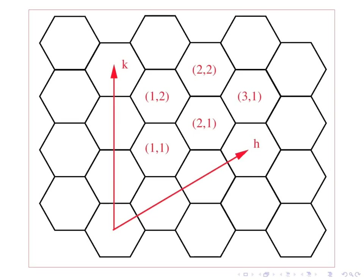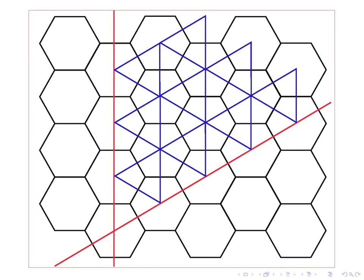Calling one axis h and the other k, we now have a coordinate pair of integers for each hexagon in the plane. Because the angle between the axes is 60 degrees instead of 90 degrees, the hexagonal coordinate system accommodates triangular patterns in a natural way.